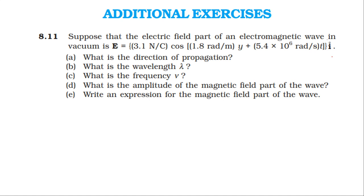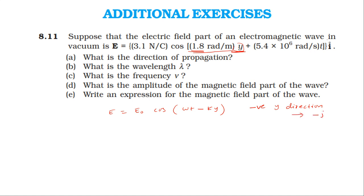In this electromagnetic wave, the electric field is in the x-direction and it's a function of y and t. Looking at the standard form E = E₀ cos(ωt − ky), the coefficient of y is negative, meaning the wave propagates in the negative y-direction. So the wave propagates along the minus-y direction.